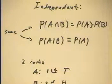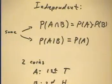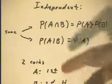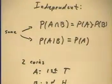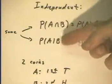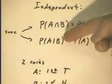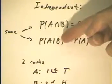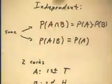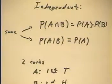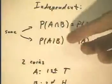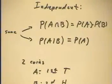Independent probabilities occur. We say that probabilities are independent when the probability of A given B is equal to the probability of A. This means that if we know that B has already occurred and it makes no difference in the probability that A occurs, that means that A doesn't care about B — A is independent of B. This is the definition of independent events.